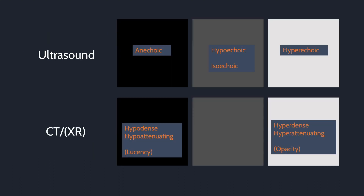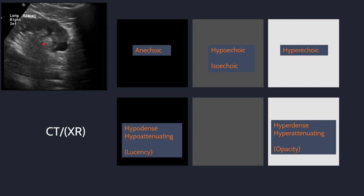With ultrasound we talk about echogenicity. Black is anechoic, white is hyperechoic, and gray is hypoechoic. When two things are the same echogenicity as each other, they are isoechoic — iso for the same. For example, on this ultrasound image of the right kidney in long axis, the inferior exophytic structure is anechoic, the renal parenchyma is hypoechoic to the renal pelvis fat, and the renal pelvic fat is isoechoic to the perinephric fat — meaning the same echogenicity.